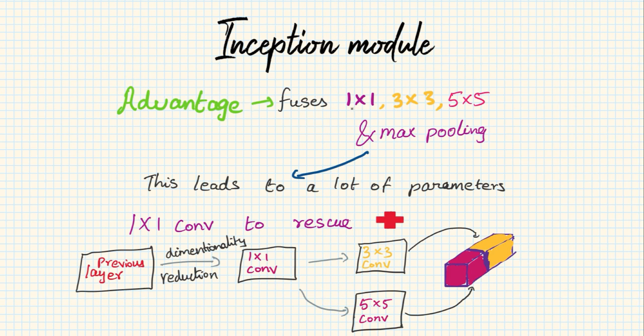It uses one by one, three by three, five by five, and max pooling layers. So naturally the number of parameters shoots up. In order to combat this, the researchers at Google used a one by one convolution to reduce the dimensions before feeding into these convolutional filters. So we have a previous layer that's first passed down to a one by one convolution to reduce the number of dimensions.